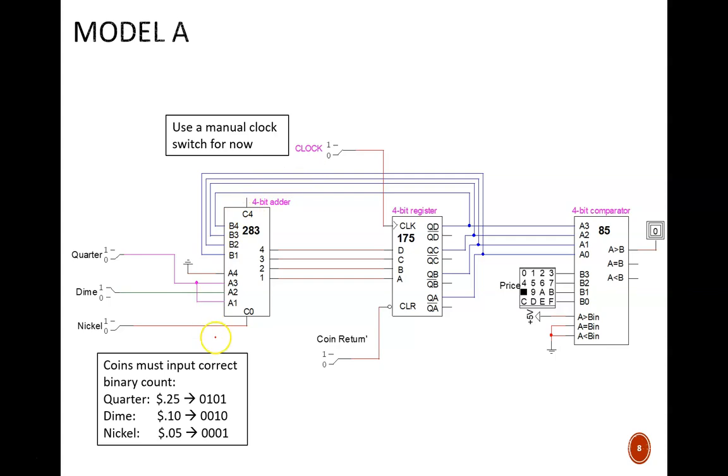Second, study these coin input signals. When a coin is input, it must add the appropriate binary number through the adder. A quarter equals 25 cents. With our memory strategy of 5 cent increments, this needs to be decimal 5 or binary 0101. This is why the quarter line activates the ports A3 and A1.